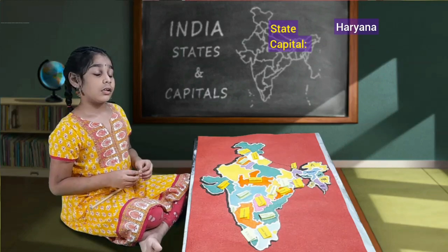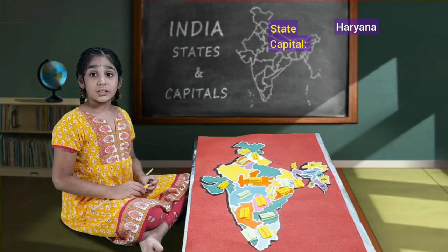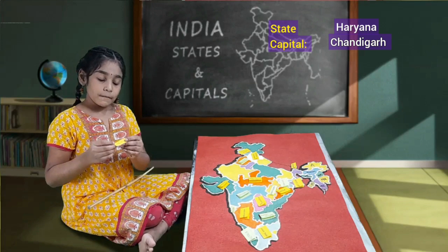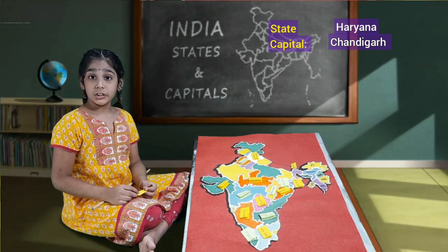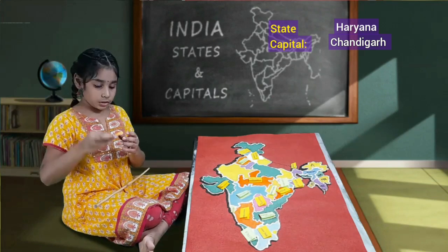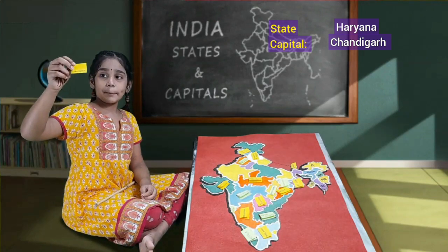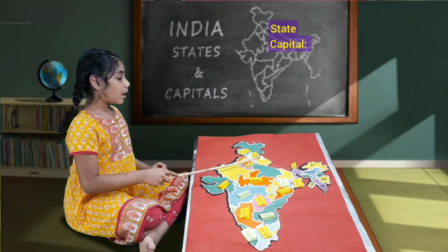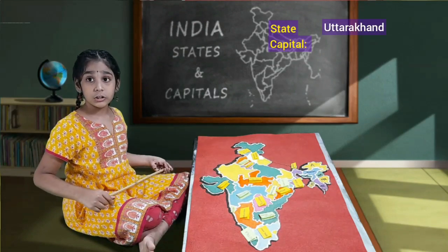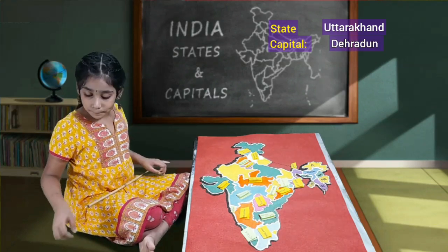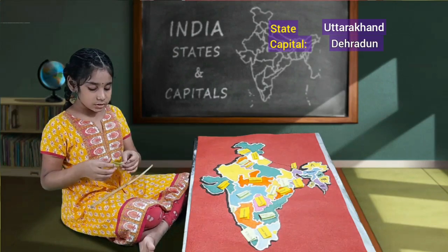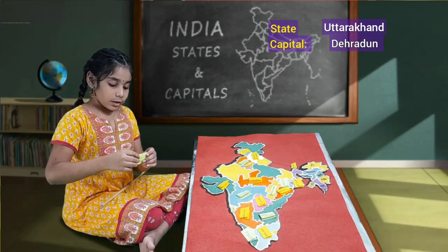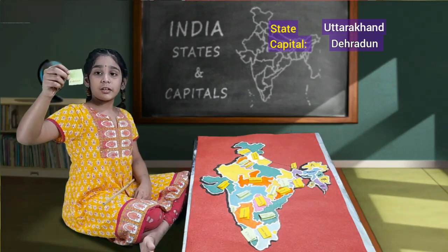Next, we'll have Haryana. Haryana and Punjab have the same capital — that is Chandigarh. Haryana's capital is Chandigarh. This is Haryana. If we open the chart, we'll have Chandigarh as capital. Next, we'll have Uttarakhand. Uttarakhand's capital is Dehradun. This is Uttarakhand. If we open the chart, we'll have Dehradun as capital.